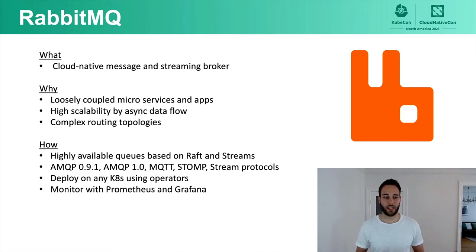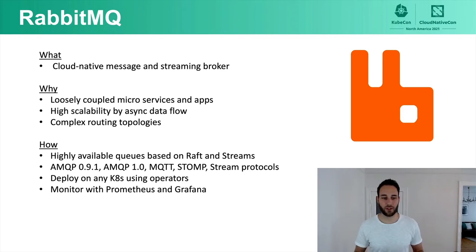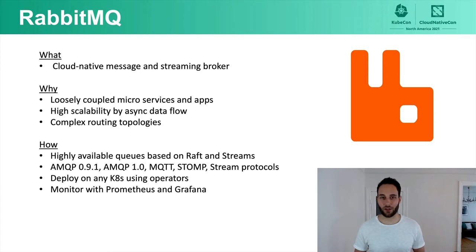With RabbitMQ you can have complex routing topologies thanks to the AMQP spec defining exchanges, queues, and bindings. Simpler examples include work queue patterns or publish-subscribe patterns. There are very modern queue types such as the Quorum queue, based on the Raft consensus algorithm. It supports AMQP 0.9.1 and AMQP 1.0 (two very different protocols), MQTT for IoT use cases, STOMP, and a new binary stream protocol. You can deploy RabbitMQ on any Kubernetes using operators and monitor it with Prometheus and Grafana.